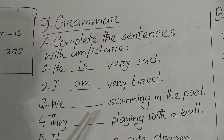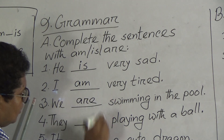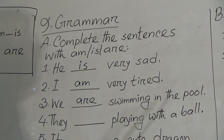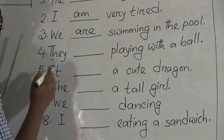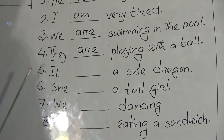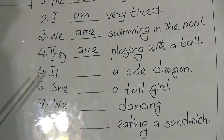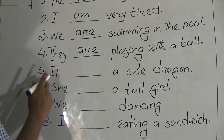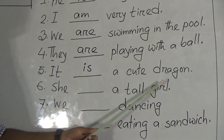Number 3: we dash swimming in the pool. So 'we' means many, not one. So after we, we have to use 'are'. We are swimming in the pool. Number 4: they dash playing with a ball. So 'they' means many, that's why we have to use 'are'. They are playing with a ball. Number 5: it dash a cute dragon. So after he, she, it, we have to use 'is'. It is a cute dragon.